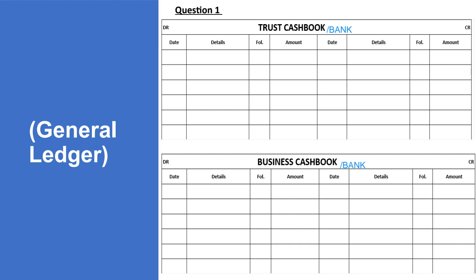This part I'm going to call the trust books, to differentiate it clearly. I've got the trust book and the business book. The trust books hold the money we get from our clients — when you collect money on behalf of clients, you put it in the trust bank specifically. The other section is the business books.